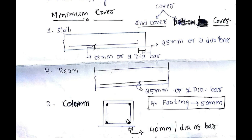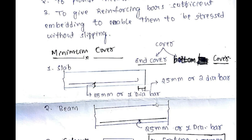For a column, the clear cover is 40 mm or 2 times half bar diameter, whichever is more. For a footing, it is 50 mm. How do we ensure that we have provided the exact clear distance?